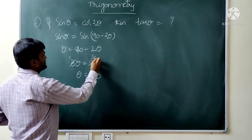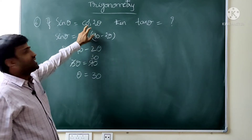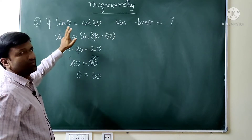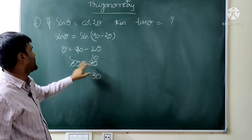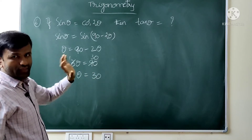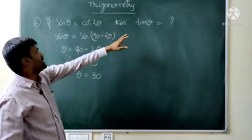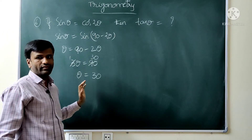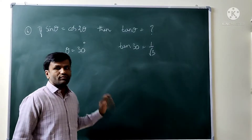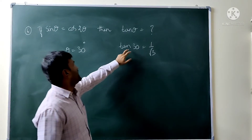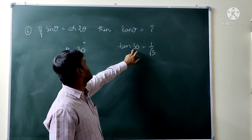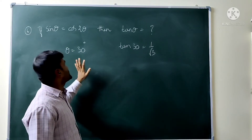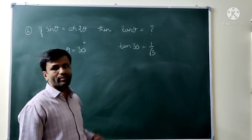Once we get θ = 30 degrees, in exam questions we save time by directly substituting. So tan θ = tan 30 = 1 by √3. This is a simple question — find theta value first, then apply directly to get the answer easily.